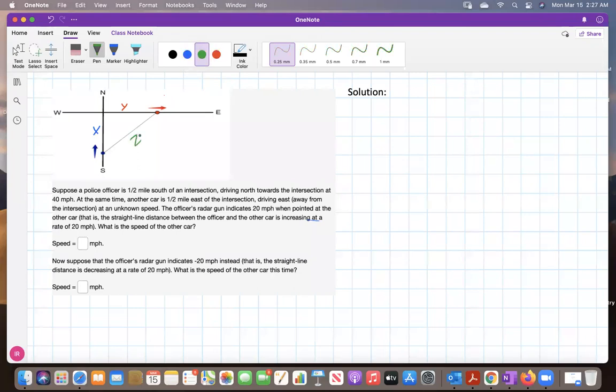Now, at any moment, the following should be true: x² + y² = z². That is true because the officer's car, the driver's car, and the intersection form at any time a right triangle.